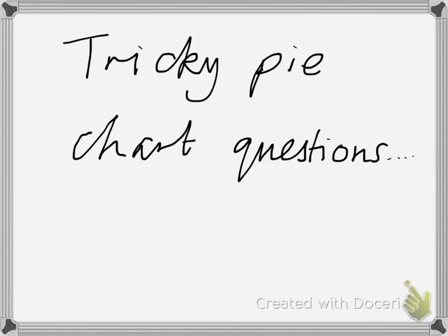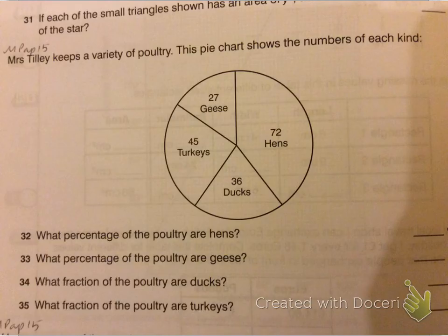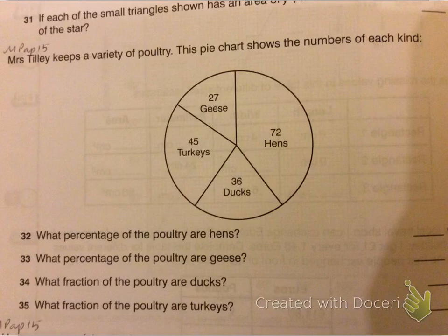Most of your pie chart questions in this week's homework should be fairly self-explanatory, but there are a couple of tricky ones so I'm just going to go through these. This question is a little bit of a pain because it gives you a pie chart and asks you to work out percentages and fractions of a whole collection of poultry that are a particular type. I'll do one example of each to demonstrate but I won't answer the questions on there — I'll choose different birds.